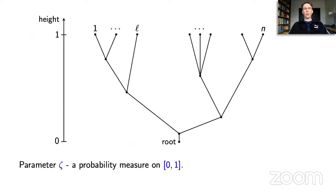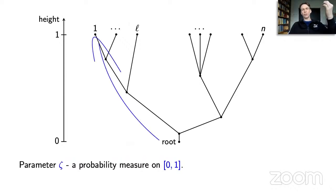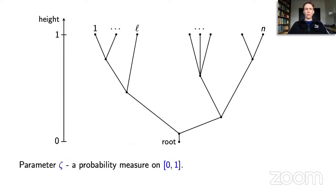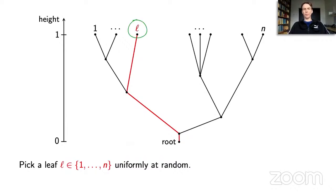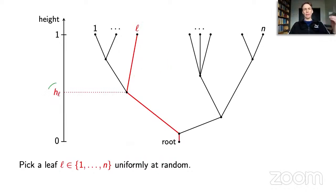Let me now describe the sequential random tree construction. Suppose we have already constructed the tree with n leaves, and I will describe how the next leaf is attached. The first leaf is attached directly to the root, so the first branch is attached at height zero. Given n leaves, in the next step we first pick one of the existing leaves uniformly at random and mark the path from the root to that leaf, since the next branch will be attached somewhere along this path. We also note the height h_l at which leaf number l was attached to the tree in its own step — that is, when the tree had l minus one leaves.